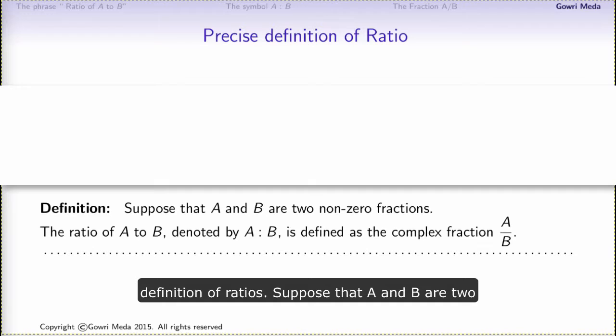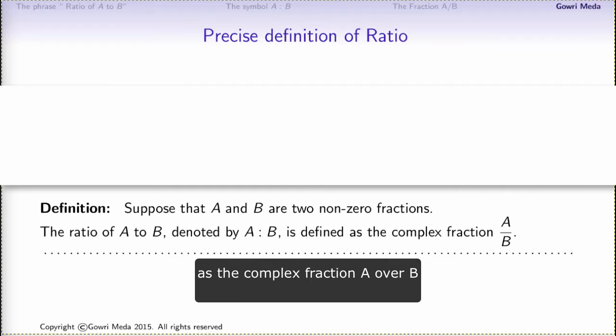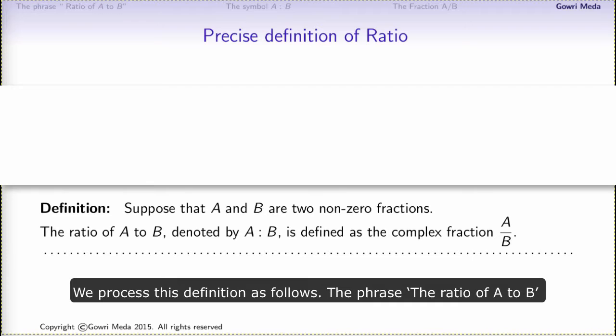The cat photo example motivates the following precise definition of ratios. Suppose that A and B are two non-zero fractions. The ratio of A to B, denoted by A colon B and read as A to B, is defined as the complex fraction A over B.